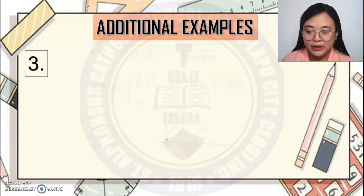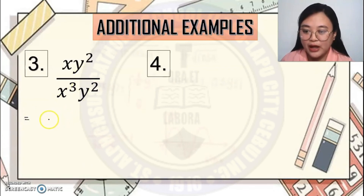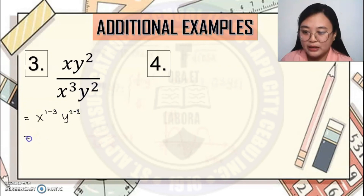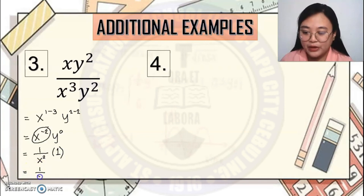Number 3: xy squared over x cubed y squared. Apply the quotient law — subtract exponents for each base: x to the 1 minus 3, and y to the 2 minus 2. This gives x to the negative 2 and y to the 0. Since y to the 0 equals 1, and x to the negative 2 becomes 1 over x squared, the final answer is 1 over x squared.